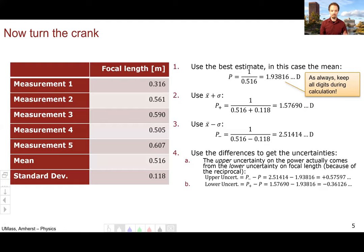We then use p plus to get what in this case is actually our lower uncertainty. We get negative 0.3126. And you'll notice here that the results are asymmetric. This is actually a positive attribute of this particular calculation technique. So our final number is 1.9 plus 0.6 minus 0.4 diopters.